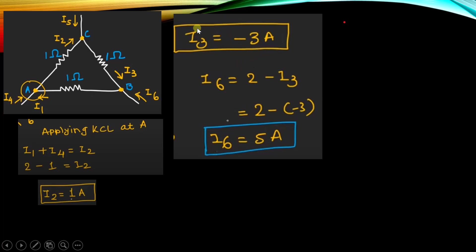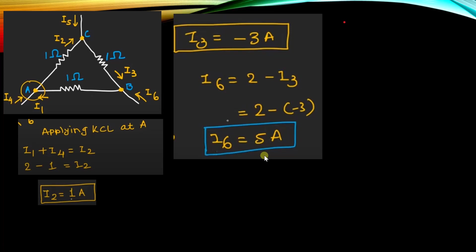Now we substitute the value of I3 into equation 1. I6 equals 2 minus I3, which becomes I6 equals 2 minus (minus 3), so I6 equals 5 ampere. In this way, we find the value of current I6 by applying KCL at three nodes: node B, node C, and node A, and solving the resulting equations.